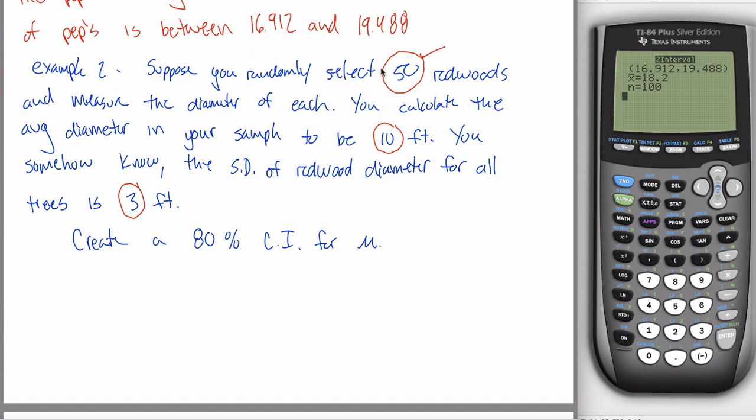This first one is my sample size, the number of trees in my sample. We always use a lowercase n for that, so n equals 50. This next one is the sample average, x bar is the symbol you use for the sample average, x bar equals 10. And then finally, the standard deviation applies to all trees. So this is a population parameter, sigma equals 3.